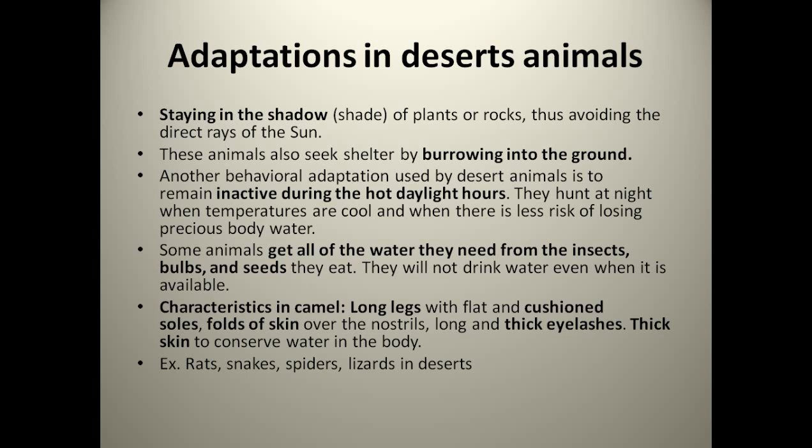Some animals get all the water they need from the insects, berries, and seeds they eat. They will not drink water even when it is available. They eat only those types of insects and seeds which provide moisture, and they try to avoid the habit of drinking water again and again.